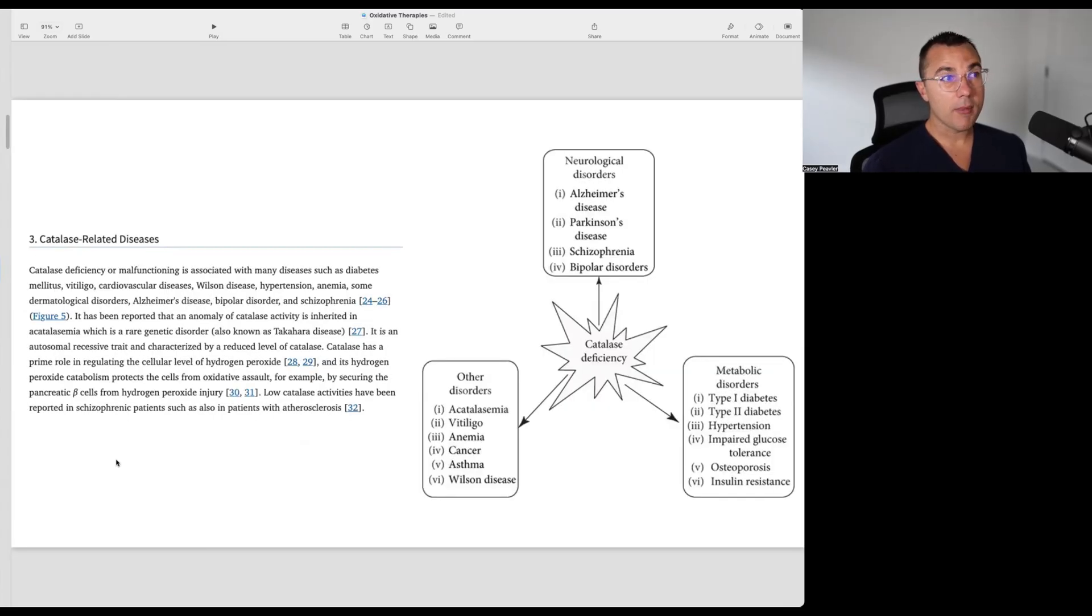Catalase-related diseases. Catalase deficiency or malfunctioning is associated with many diseases such as diabetes mellitus, vitiligo, cardiovascular diseases, Wilson's disease, hypertension, anemia, some dermatological disorders, Alzheimer's disease, bipolar, and schizophrenia. It is then reported that an anomaly of catalase activity is inherited in acatalasemia, which is a rare genetic disorder, also known as Takahara disease. It is an autosomal recessive trait and characterized by a reduced level of catalase. Catalase has a prime role in regulating the cellular level of hydrogen peroxide, and its hydrogen peroxide catabolism, or breakdown, protects the cells from oxidative assault. For example, by securing the pancreatic beta cells from hydrogen peroxide injury. Low catalase activities has been reported in schizophrenic patients, as well as in patients with atherosclerosis. And you'll see here by this graphic that if you have a catalase deficiency, it's associated with several disorders of the neurologic systems, metabolic systems, as well as cancer, which we'll talk about.